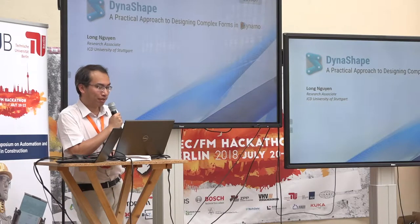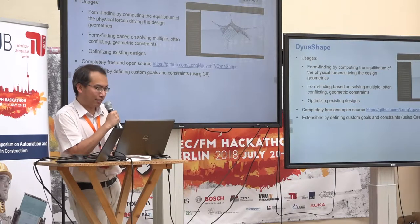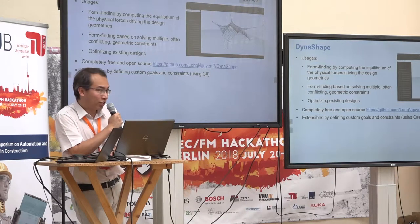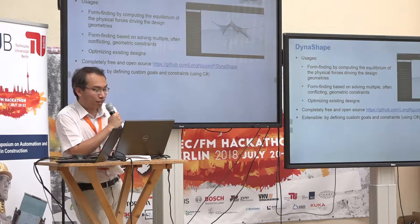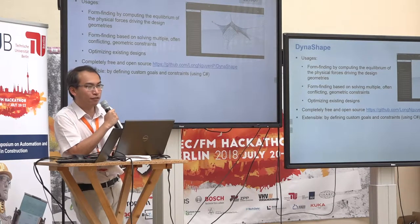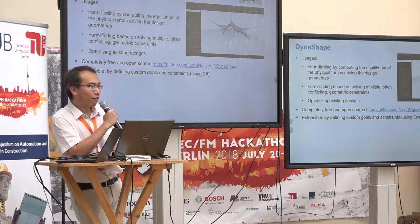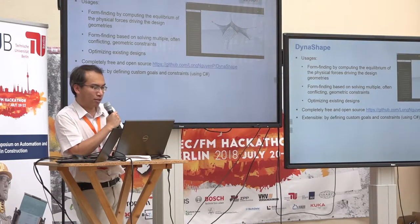Dynashape is a package for Dynamo and it has two usages. It helps you with formfinding either by simulating physics — so you can do formfinding for tensile structures or catenary shells as I will show in a live demo. The other way of formfinding is solving difficult, multiple, often conflicting geometric constraints. For example, when you have a double curved surface and you want certain panels to be planar — those kinds of constraints are hard to solve directly by hand because there are so many of them and they are usually conflicting.